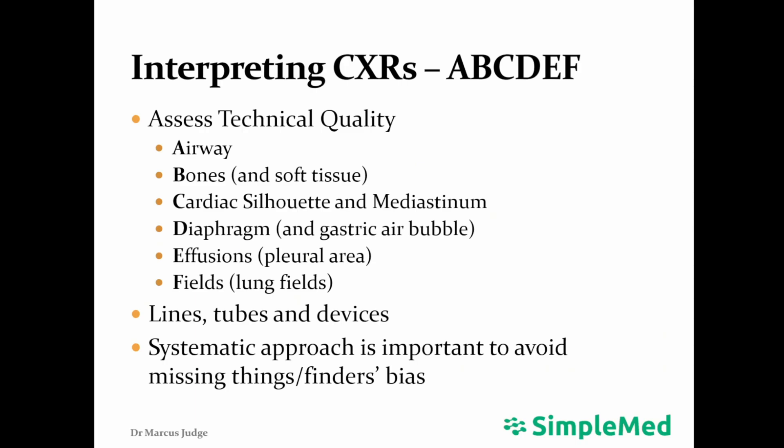In order to interpret a chest X-ray, a systematic approach can be very helpful. This avoids missing things by only looking for certain diagnoses and helps with finders bias, a phenomenon whereby the radiologist finds something pathological and then stops looking for further abnormalities. After assessing technical quality, which we will cover in another lecture, an A-to-F approach can be used to check all aspects of the scans for anomalies.